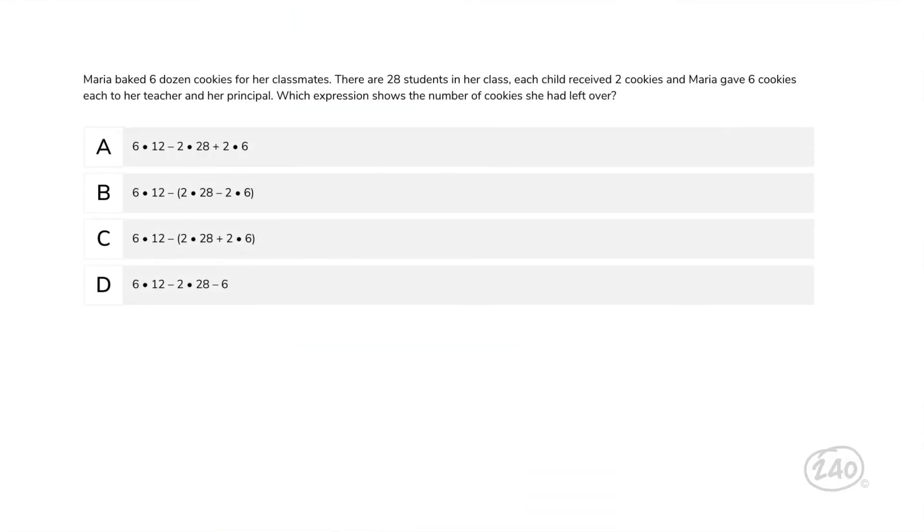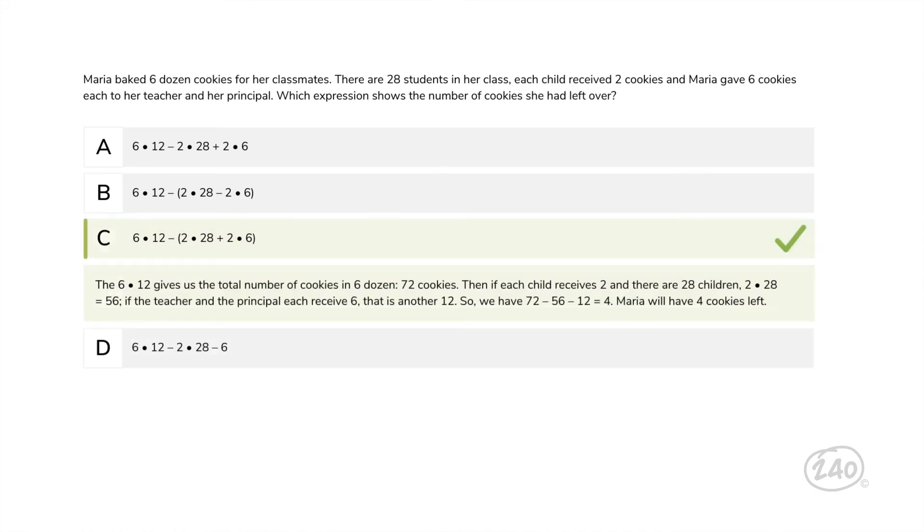Nice! So we've only got one category left: algebra and geometry. Let's start with algebra and take a look at one of those questions where you have to write a number sentence for a given situation. Maria baked six dozen cookies for her classmates. There are 28 students in her class. Each child received two cookies and Maria gave six cookies each to her teacher and her principal. Which expression shows the number of cookies she had left over? The 6 times 12 gives us the total number of cookies in six dozen, which is what Maria is starting with. Then we need to determine how many she's giving away. If each child receives two and there are 28 children, two times 28. If the teacher and the principal each receive six, that's another six times two. So we have 6 times 12 minus the quantity of two times 28 added to two times 6. So this is the best choice. Nice!